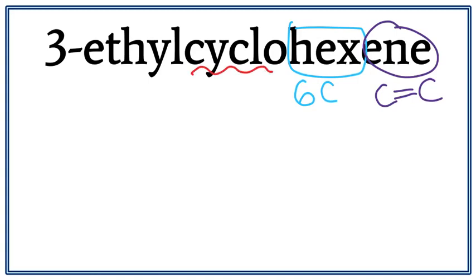Now we see the word cyclo. This means that the 6 carbons are arranged in a ring. Every time we see the word cyclo, we have to draw a ring. Now when we draw 6 carbons in a ring, we end up with a hexagon. So let's draw a hexagon.